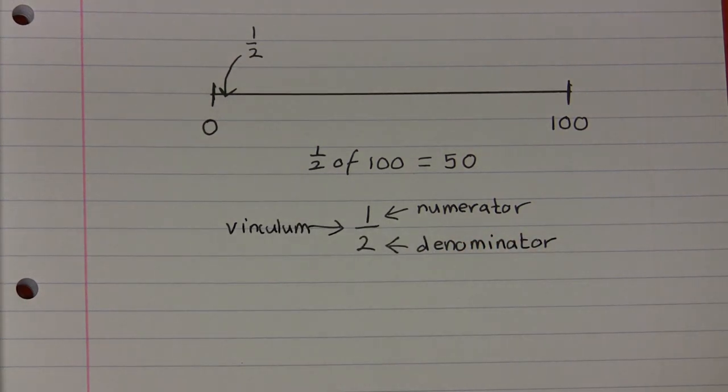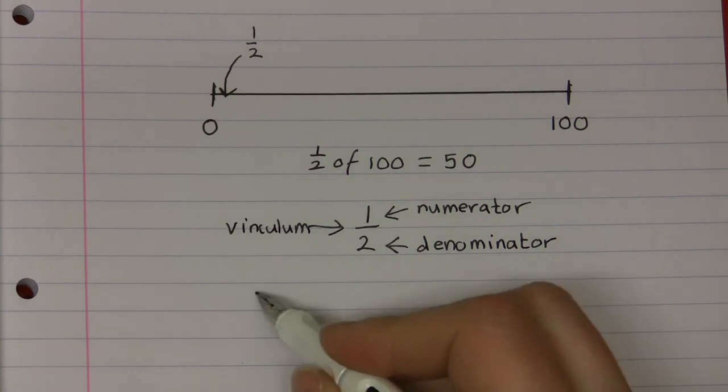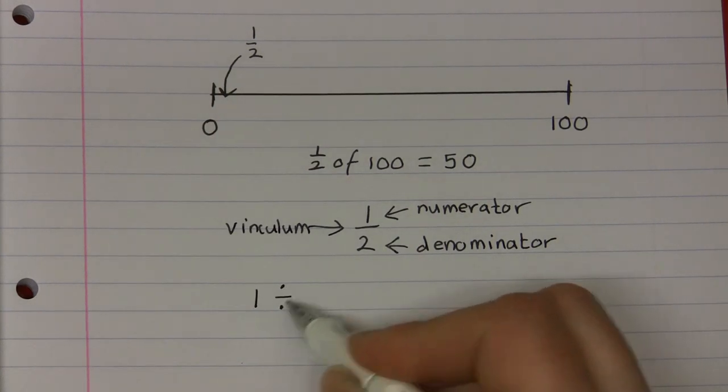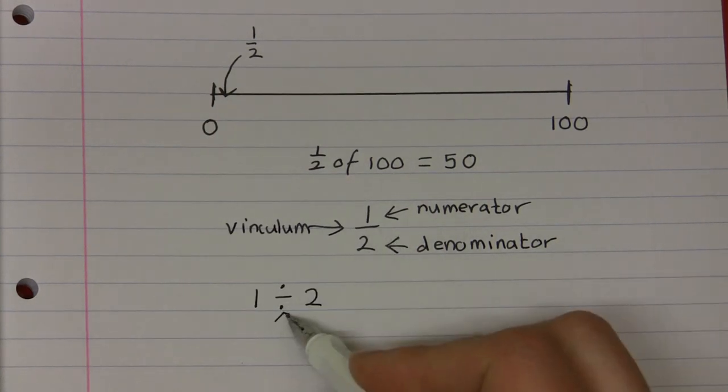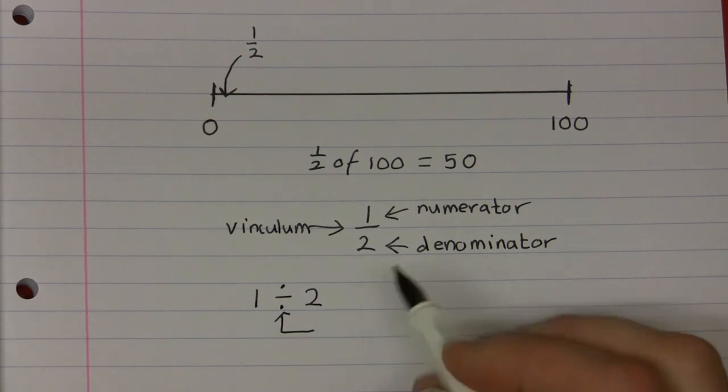Another way of writing one half would be to write the division sum 1 divided by 2. Here the division symbol itself has a name. This is the obelus.